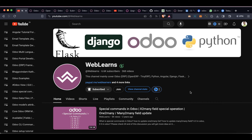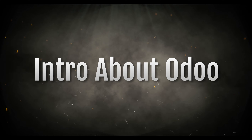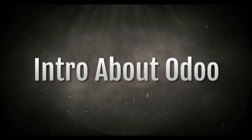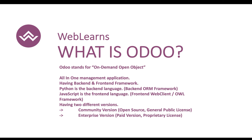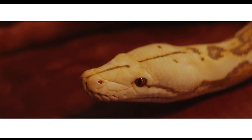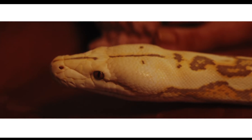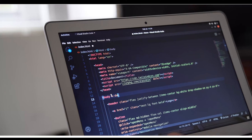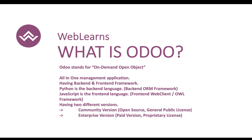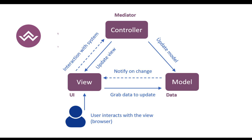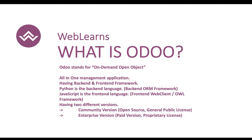Let's start by understanding what Odoo is. Odoo is an ERP software that offers a suite of all-in-one applications including CRM, sales, purchase, inventory, manufacturing, point of sale, human resources, website functionality, and many more. The name Odoo stands for 'On-Demand Open Object.' Odoo primarily uses Python as its back-end language and JavaScript as a front-end language, and it follows its own Model-View-Controller (MVC) structure.